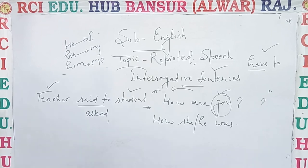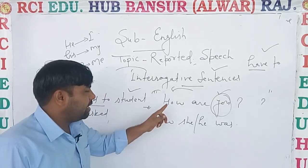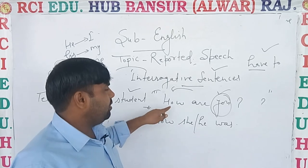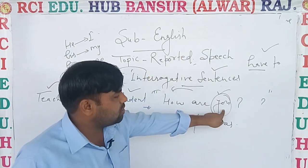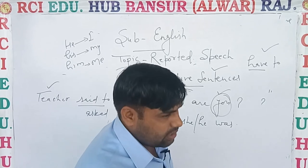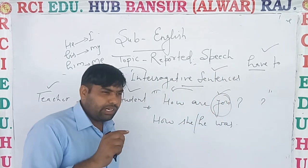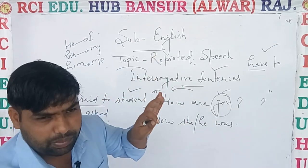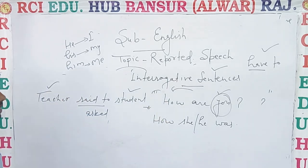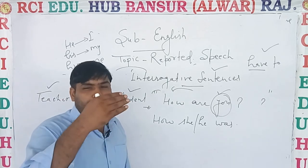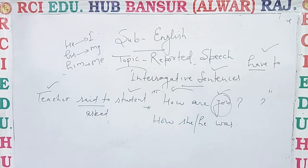So students, the important thing is that if an interrogative sentence is there, we use subject first and then helping verb to make it simple. When interrogative sentences are given and we change into indirect, we have to make them simple — then it will be correct. Okay, these are interrogative sentences. Next class we will discuss imperative sentences. Thank you.